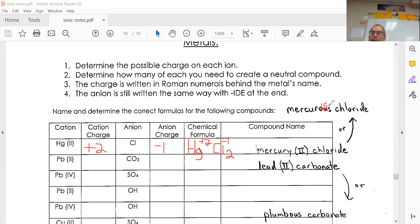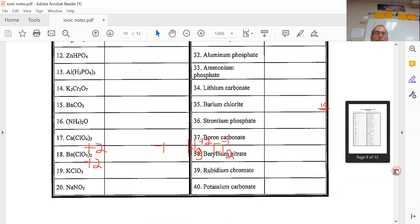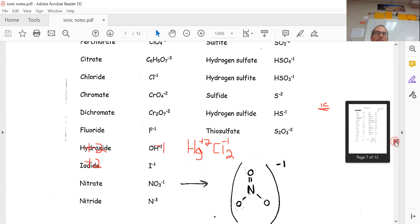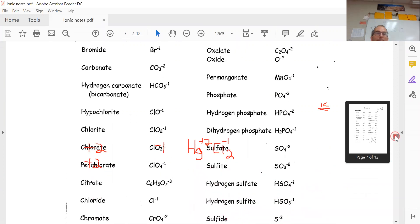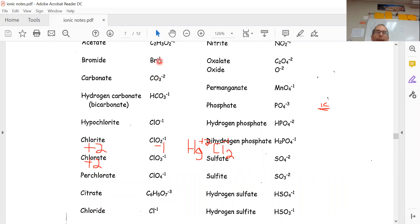Next one is lead. If I see a roman numeral two, I'm led to believe that would be plus two. If I'm looking for CO3, that's a polyatomic. I'm going to go look on my common ion chart because I don't remember what that is, and I'm going to scroll up.